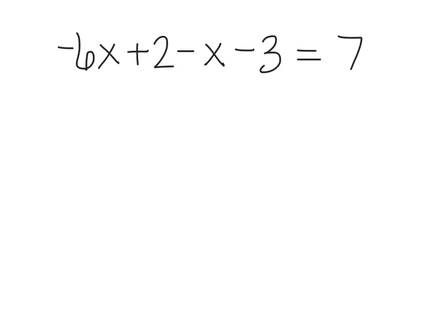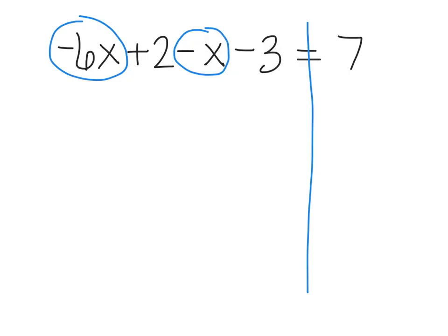In this next example, I'm going to do the same thing. I'm going to draw my wall and start by circling the x terms and putting those together. The coefficient here is 1. If I put together negative 6 and negative 1, those both have the same sign, so I'm going to add them and I get negative 7x. Then I'm going to put together my constants, which do not have variables. I have positive 2 and negative 3, and since those signs are different, I'm going to subtract them and I get negative 1.